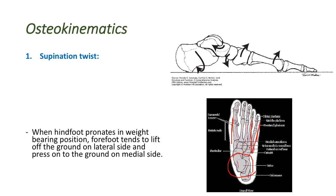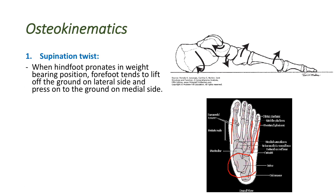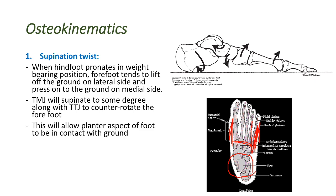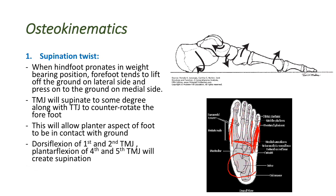The hind foot pronates or everts in weight-bearing, causing the lateral forefoot to raise from the ground while the medial forefoot is pressed down. To prevent this, the tarsometatarsal joint goes into slight supination so the lateral aspect of the forefoot touches the ground, bringing the entire plantar surface into contact with the ground. For this supination twist, the first and second tarsometatarsal joints go into dorsiflexion and the fourth and fifth go into plantar flexion.